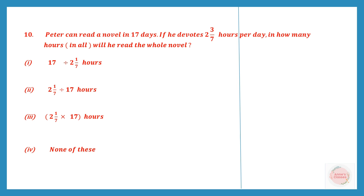Question 10. Peter can read a novel in 17 days. If he devotes 2 3/7 hours per day, in how many hours in all will he read the whole novel? That means in 17 days he can read a full novel, but he spends a certain number of hours per day.